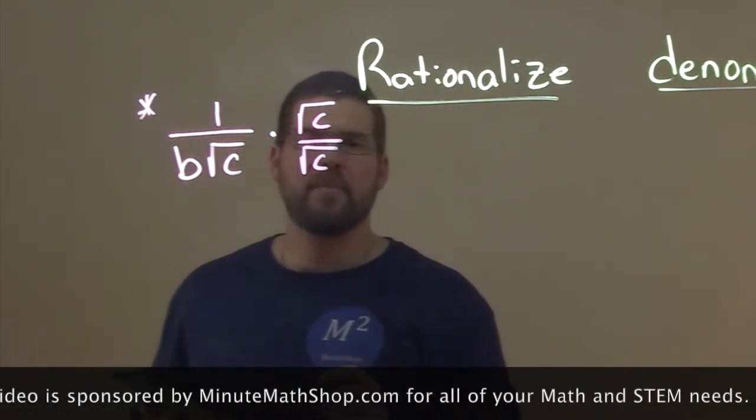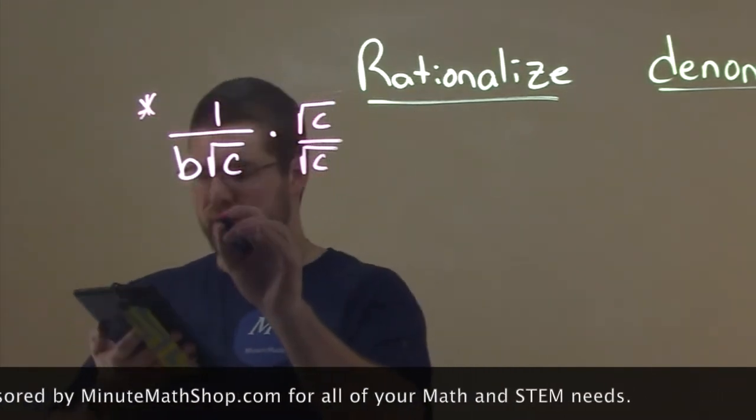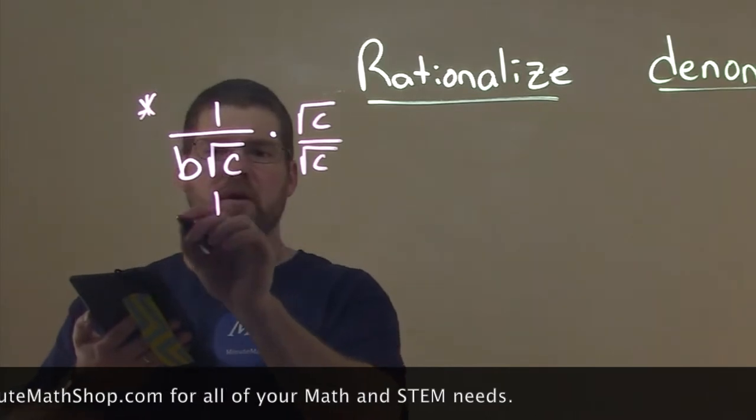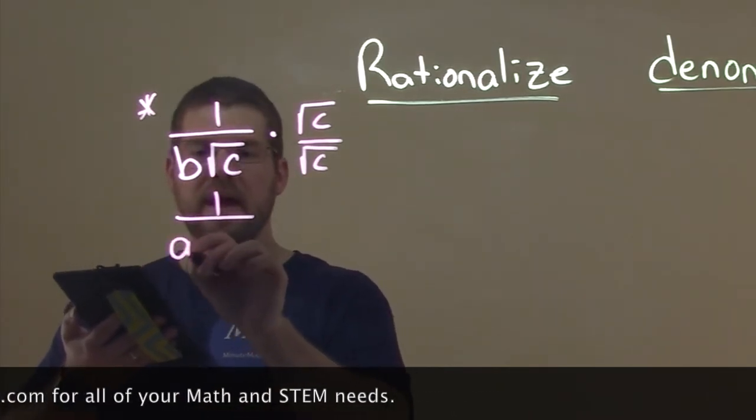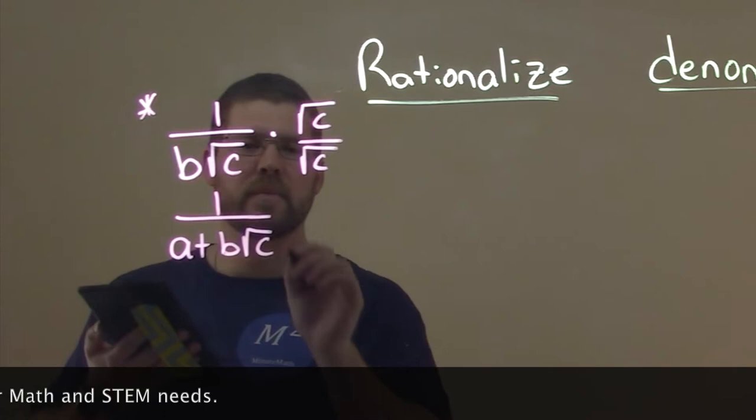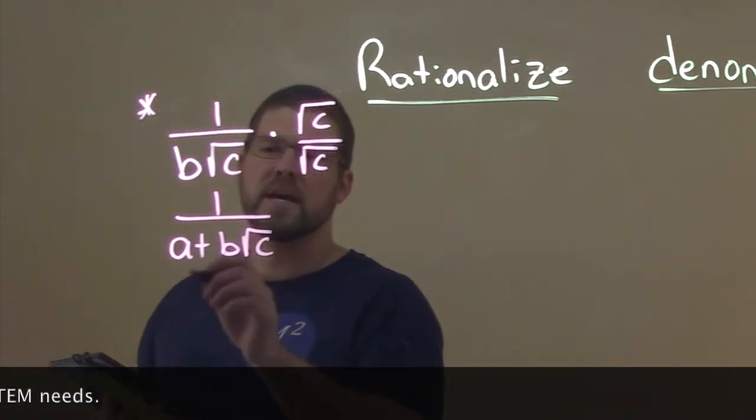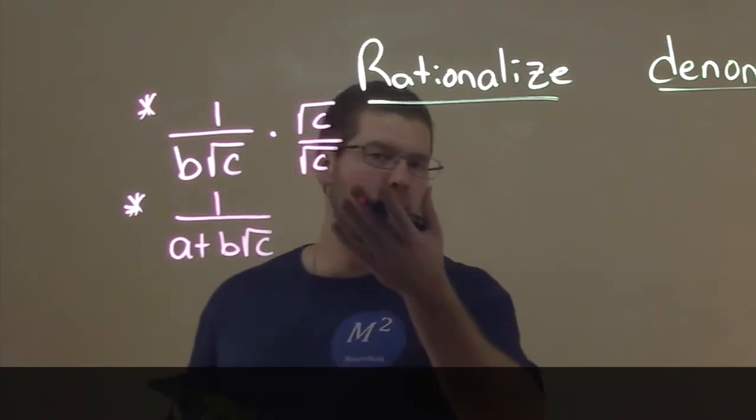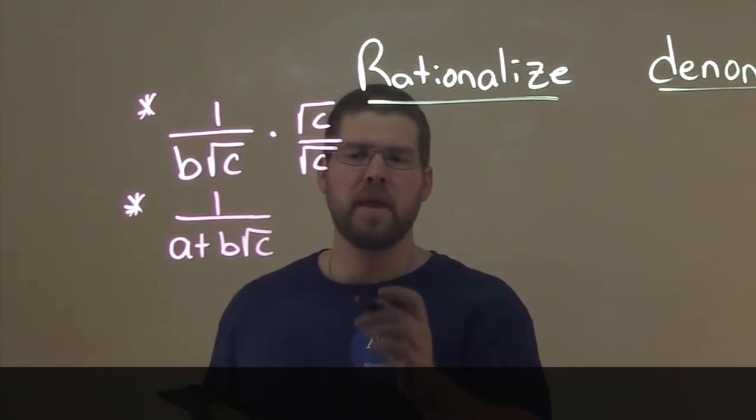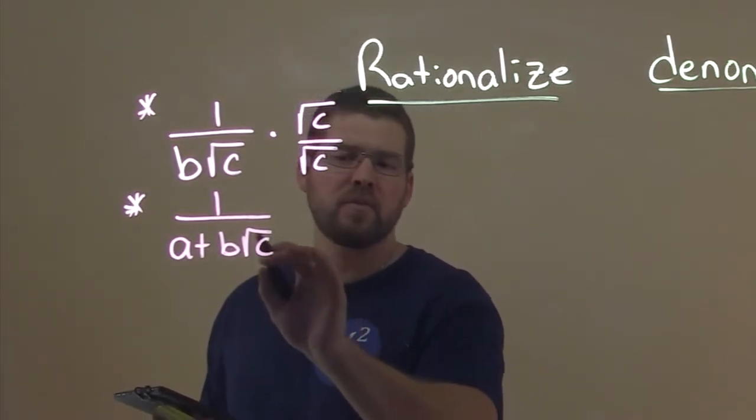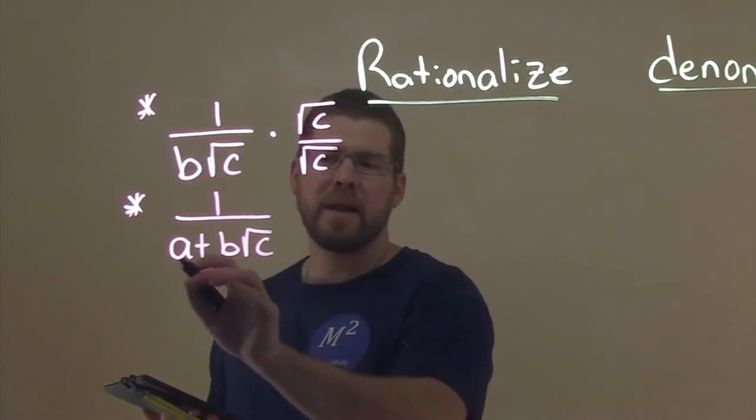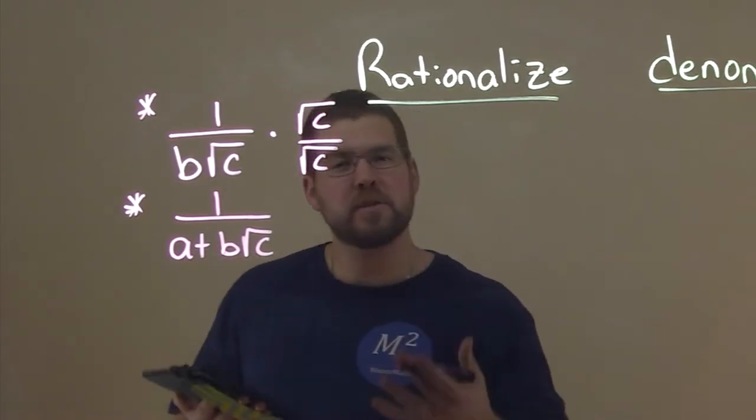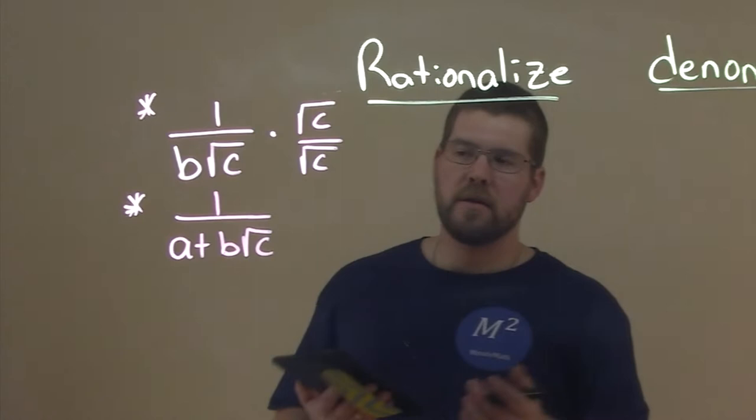The same thing happens when we have, let's say, 1 over a plus b square root of c. Notice here, for the second one, that I can't just multiply this by square root of c over square root of c. If I did so, yes, this one would be eliminated, but then we would add a square root of c to the a and we still have a square root in the denominator. It doesn't help us.